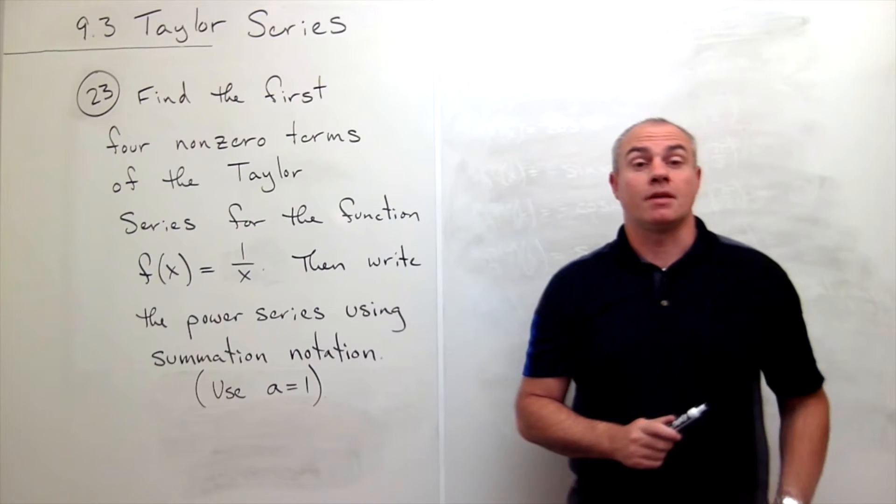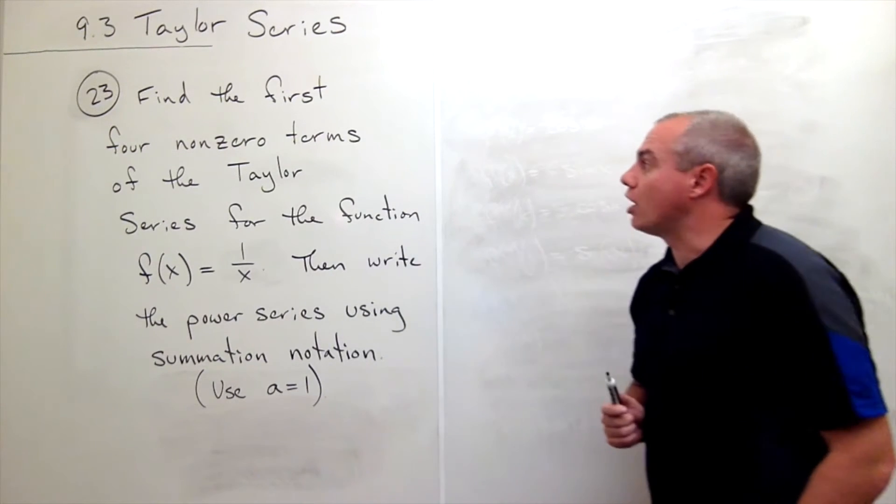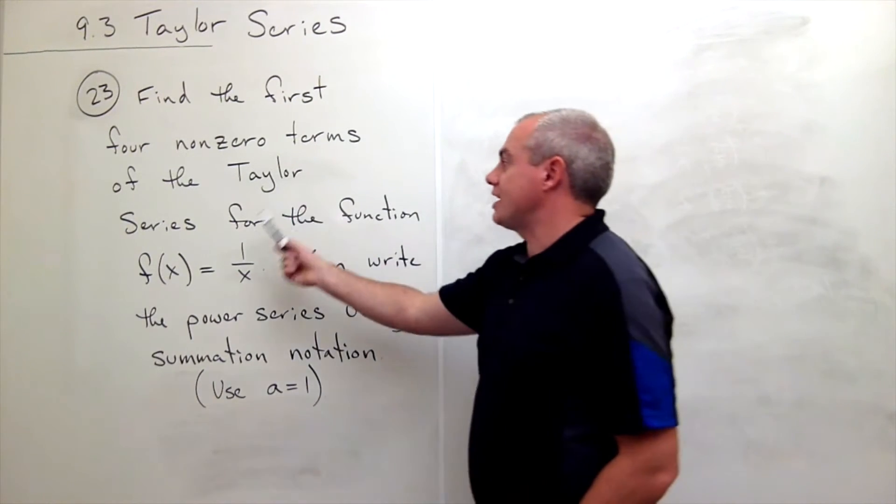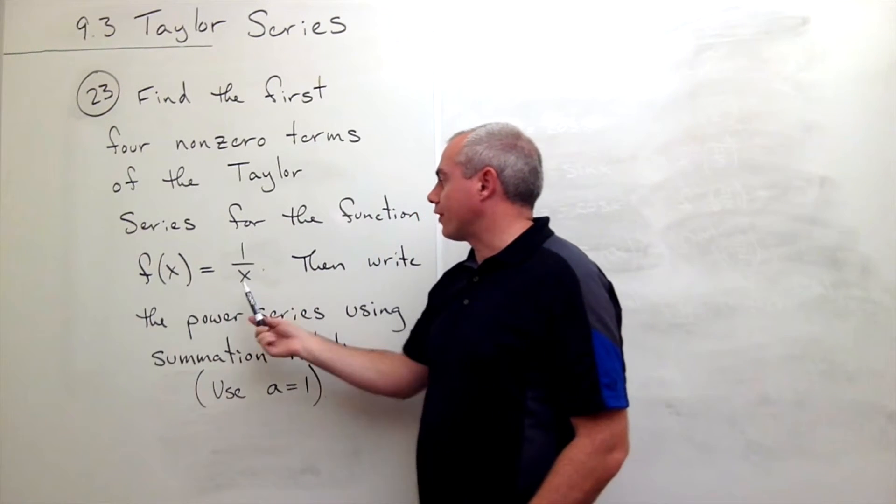I'm the calculus professor and today I'll be talking to you about Taylor series. In problem number 23 we'd like to find the first four nonzero terms of the Taylor series for the function f of x equals one over x.